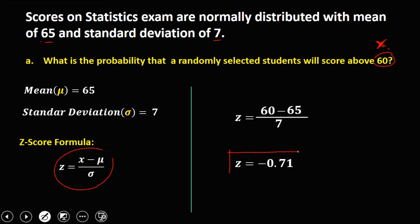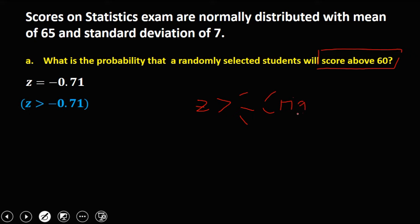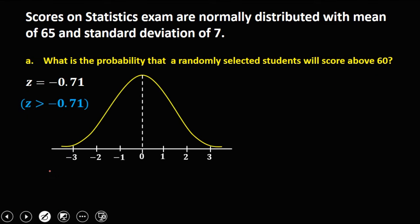So −0.71 is the standard score when the observed value is 60. To solve for the probability, since we're looking for the score above 60, we need z greater than −0.71. For z greater than (above/more than), the area is to the right. To solve for the area using the normal curve, we locate −0.71.